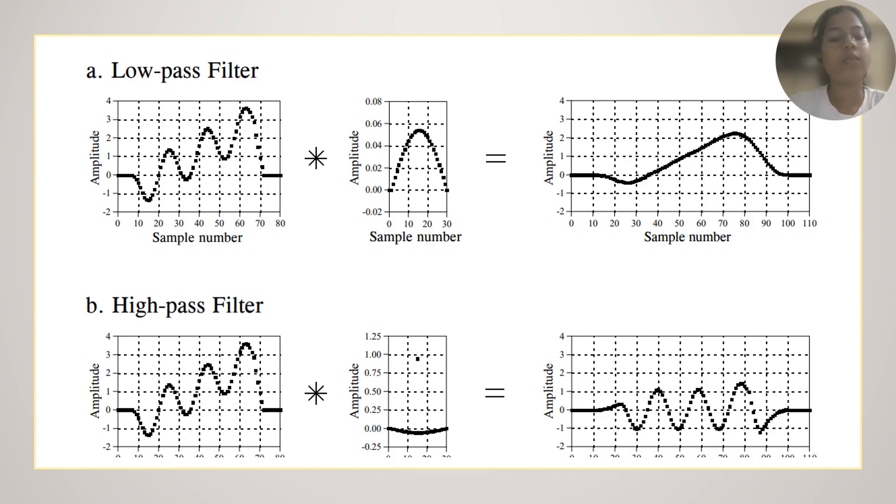Whereas, when you come to the high-pass filter, we observe that it only allows the more rapidly changing sinusoids to pass through it. It only allows high-frequency components of the signals to pass through it, whereas blocking the low-frequency components.